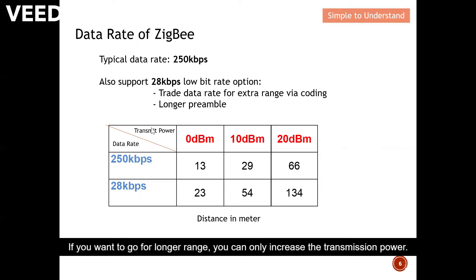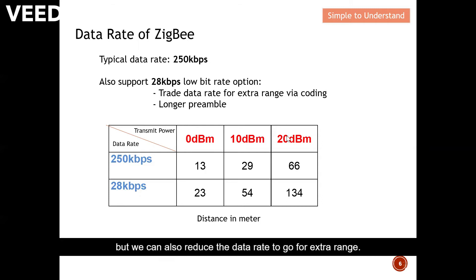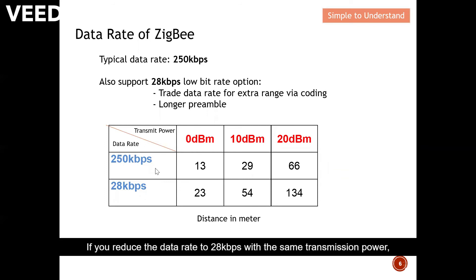To recall from Bluetooth: if you want longer range with Bluetooth, you can only increase transmission power. For ZigBee, you can also increase transmission power, but you can also reduce the data rate to go for extra range. As you can see from the table, if you reduce the data rate to 28 kilobits per second with the same transmit power, the range increases to 23 metres.